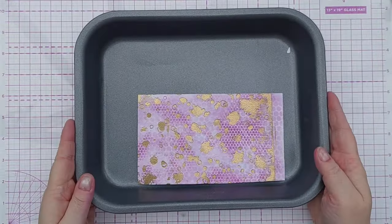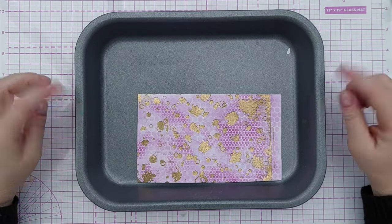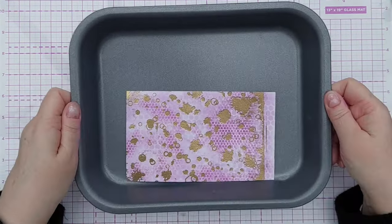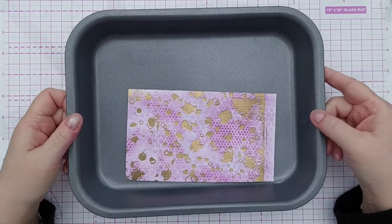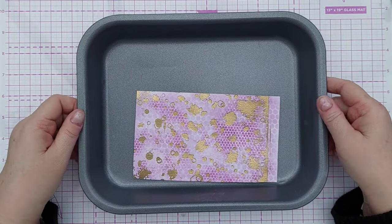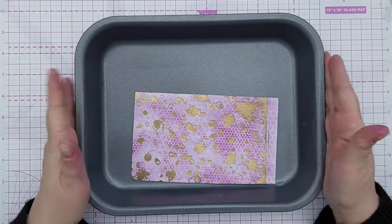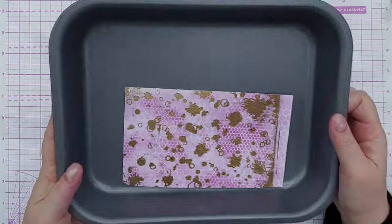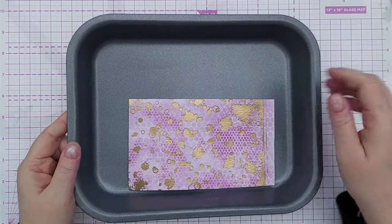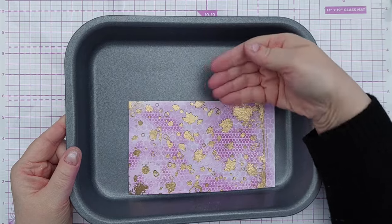I had a question the other day about what this is that I put my embossing in to heat it. It's just a non-stick baking tray that I picked up very cheaply from a local supermarket and I do my heating in this because it's made of metal so it gets hot and I think it helps having the heat coming from both sides.